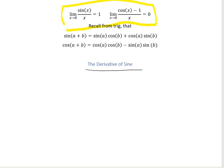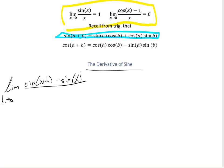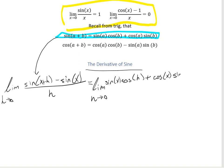First, we're going to investigate the derivative of sine. We're going to have the limit as h approaches 0 of sine of (x + h) minus sine of x, divided by h. That's the definition using the limit of the derivative of sine. Now let's simplify it. I'm going to use the addition identity to rewrite sine of (x + h) as sine of x cosine of h plus cosine of x sine of h, all over h.